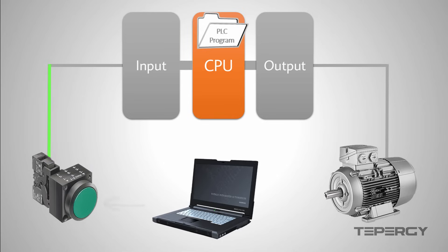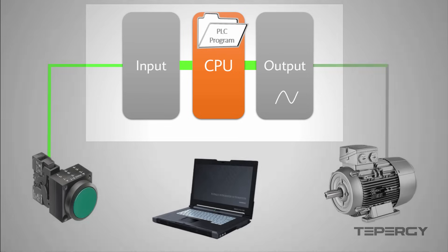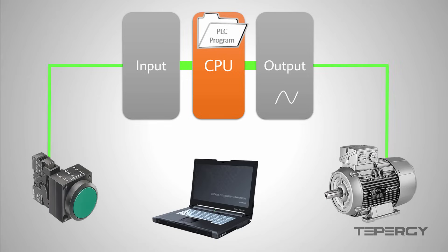Now, if we press the button, an electrical signal will be sent to the PLC. The PLC input will deliver this signal to the CPU, but first must present it in a format that the CPU can process. Because the CPU is a computer system and cannot process the raw electrical signal. The CPU will process the data received and send the result to the output. The output turns the data to a raw electrical signal again and applies that to the motor and turns it on.